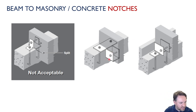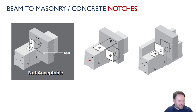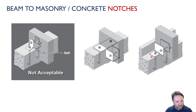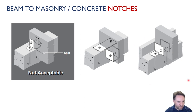One option is to design a fabricated connection like this to pick up the bottom of that beam. Another option, if possible, is to design the wall so that it has a notch in it instead of the beam having a notch, so I can bring the entire beam and just sit it right down on top of that wall. If that concrete sill already exists, that might not be an option. But if all of these are part of a new design, it would be much better to cut out the concrete than to cut out the wood.